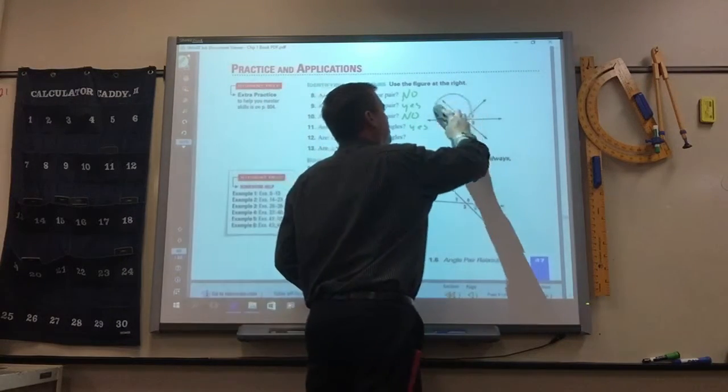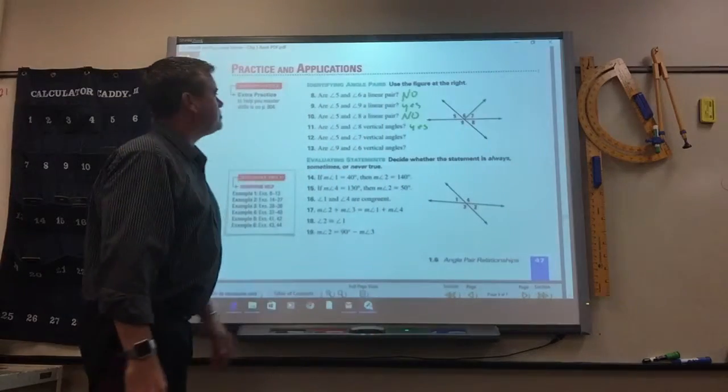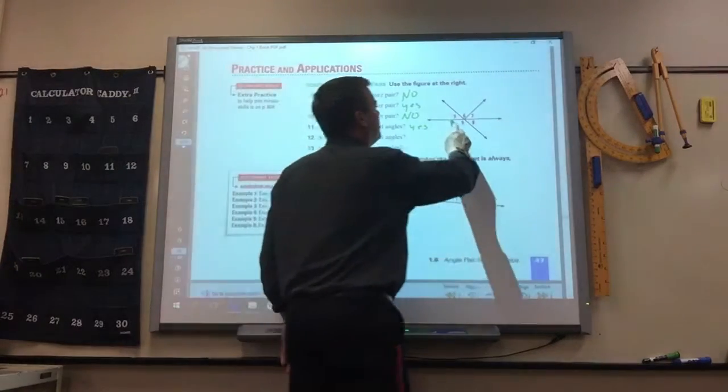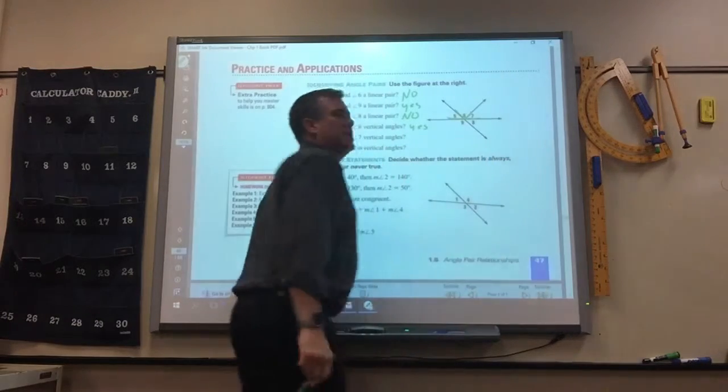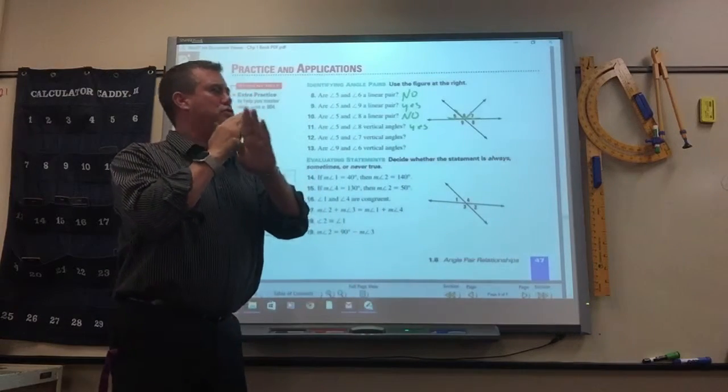You guys can draw on yours too, I think, if you need to. Are 5 and 7 vertical? No, because they got to be two straight lines.